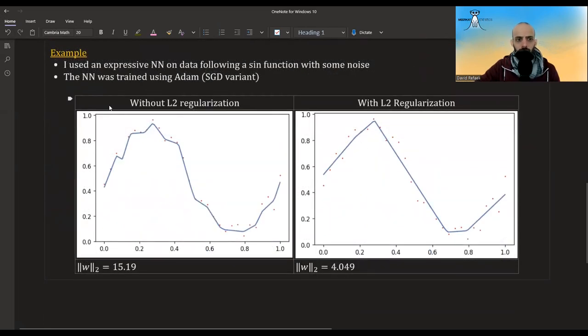I want to show you a small example. I used an expressive neural network on data following a sine function with some noise. Here you can see the result without L2 regularization. You can see it really tries to fit this point and then fit this point. It does all this crazy stuff. If we add L2 regularization, it doesn't do all of this. It tries to fit the points, but without all these crazy maneuvers. We can see also that the L2 norm of the weights in this case is high, and in this case it's much, much lower. So we can see that the regularization worked and the L2 norm of the weights is lower.